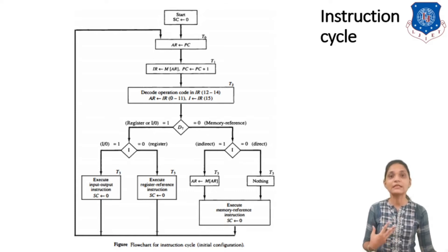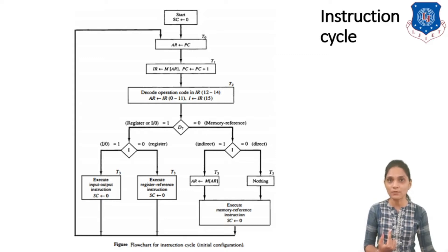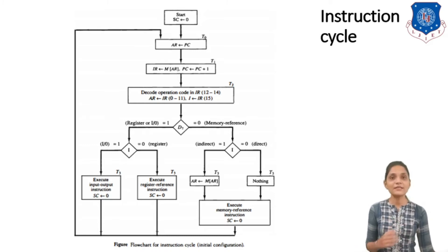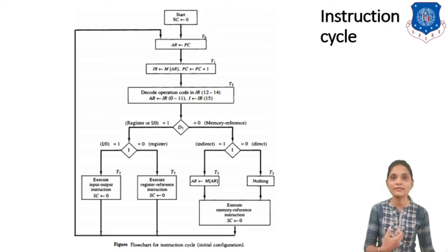The first task is fetching the instruction at timing signal T0: store the content of the program counter into the address register so you can access the data from that location. At timing signal T1, store the content given by the address register into the IR register, and increment the program counter by 1 so that next time you can access the next instruction.